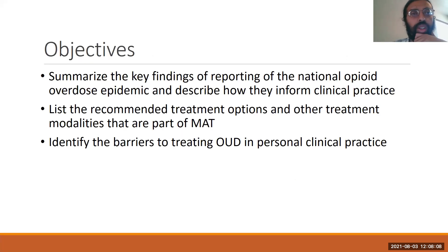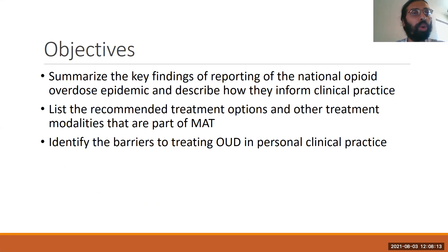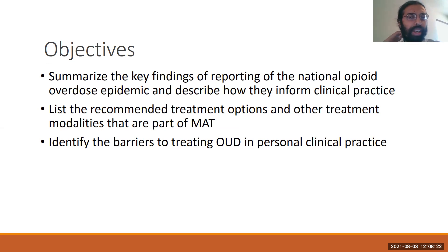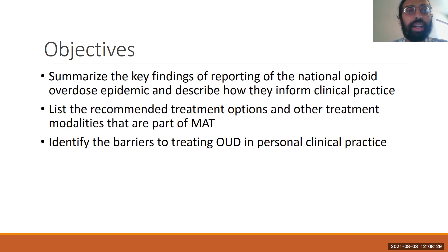We're going to talk about some of the key findings of the national opioid overdose epidemic, as it has been defined by the White House. We'll then go into recommended treatment options — what's recommended and what's not — and end with identifying some of the barriers in treating opioid use disorder in clinical practice.